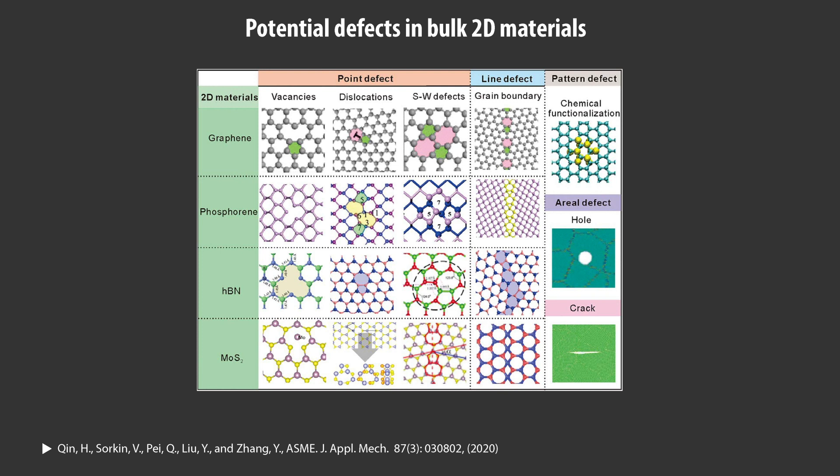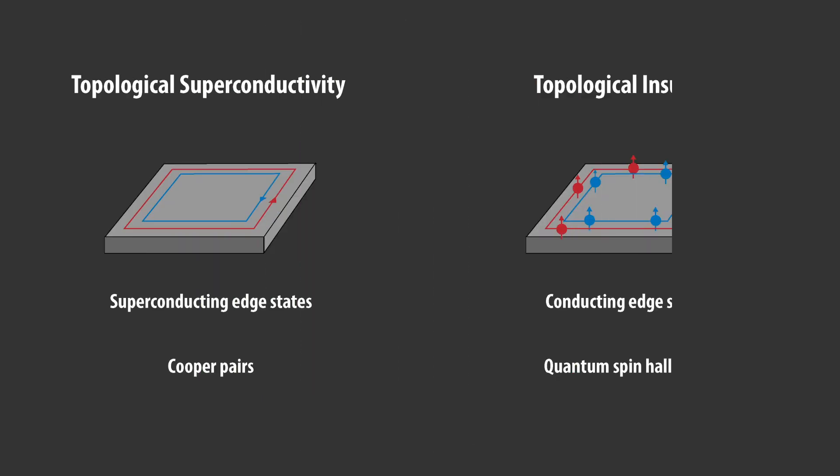Because topological superconductivity is confined to the surface, this type of superconductivity has some potential advantages in terms of being protected from some defects that plague standard bulk superconductivity, and as such is a hotly pursued topic in physics today. Additionally, this isn't the only phase of matter that is topological. Another commonly discussed form is a topological insulator, which is insulating in the bulk while being conductive on the surface.